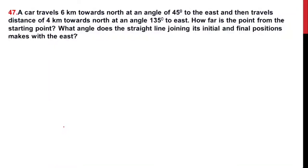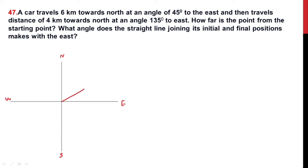Hello everyone, let's do this problem. A car travels 6 kilometers towards north at an angle of 45 degrees to the east, and then travels a distance of 4 kilometers towards the north at an angle of 135 degrees to the east. How far is the point from the starting point, and what angle does the straight line joining its initial and final position make with the east?